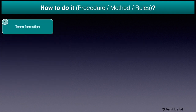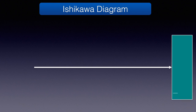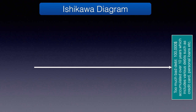Steps Involved. Step 1: Form a team based on the symptom. For example, for a high bad debt symptom, you might need family members, spouse, friends, etc. to be part of the problem-solving team. Step 2: Describe the problem properly with the help of this team. Here the team described the problem as too much bad debt — $100,000 accumulated over 10 years — which includes various debts such as credit card, personal loans, etc. Please refer to my videos on 8D where I have covered steps 1 and 2 in detail; the link is in the description box.